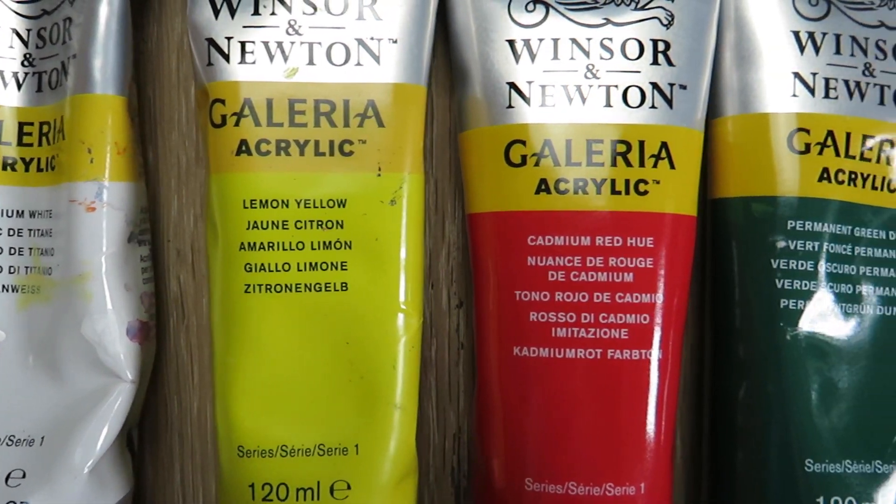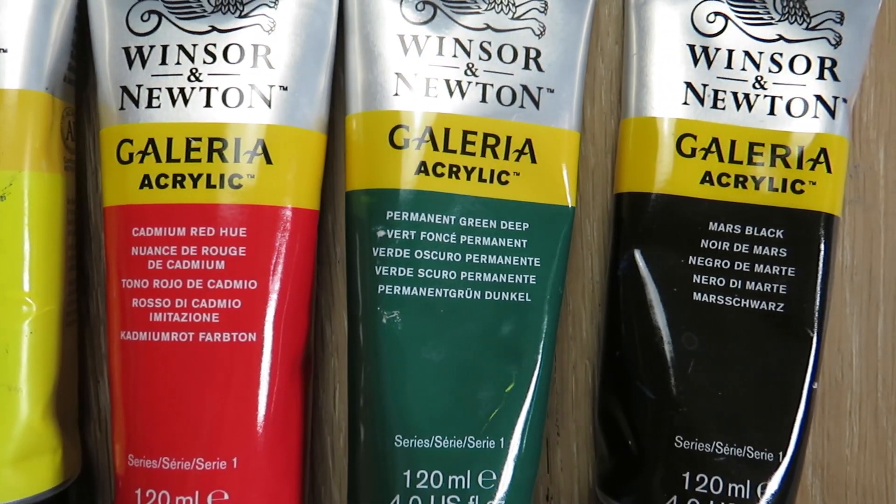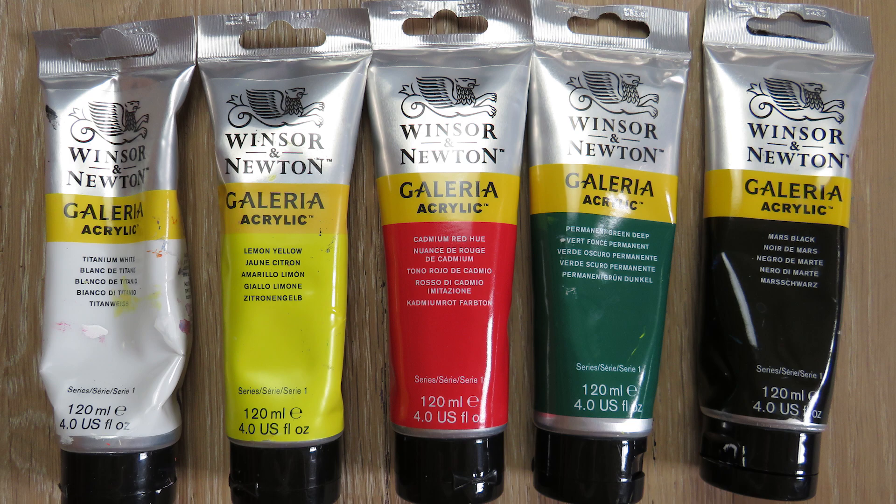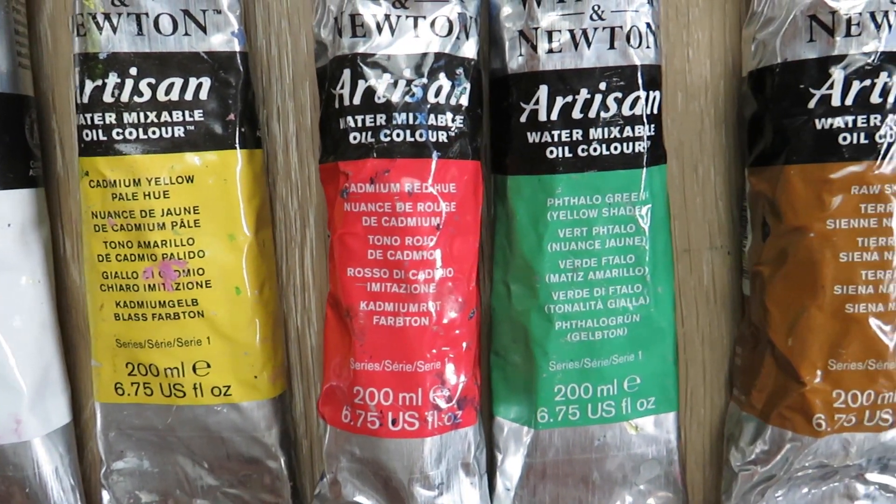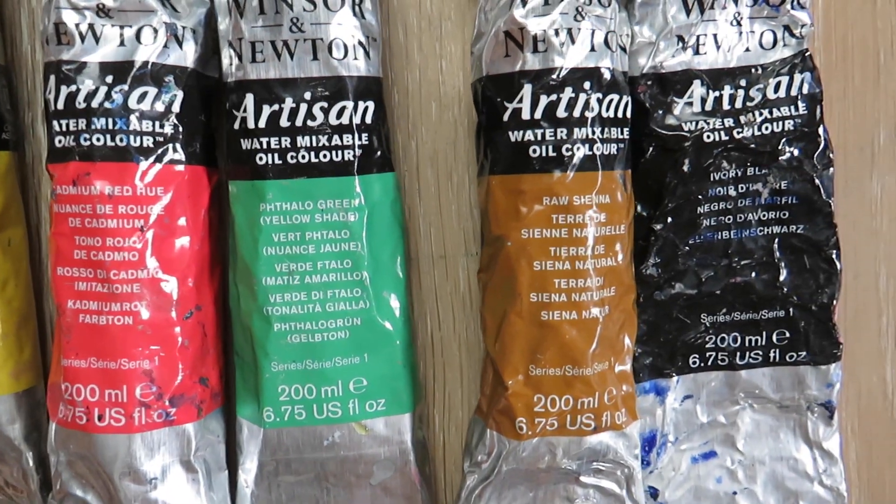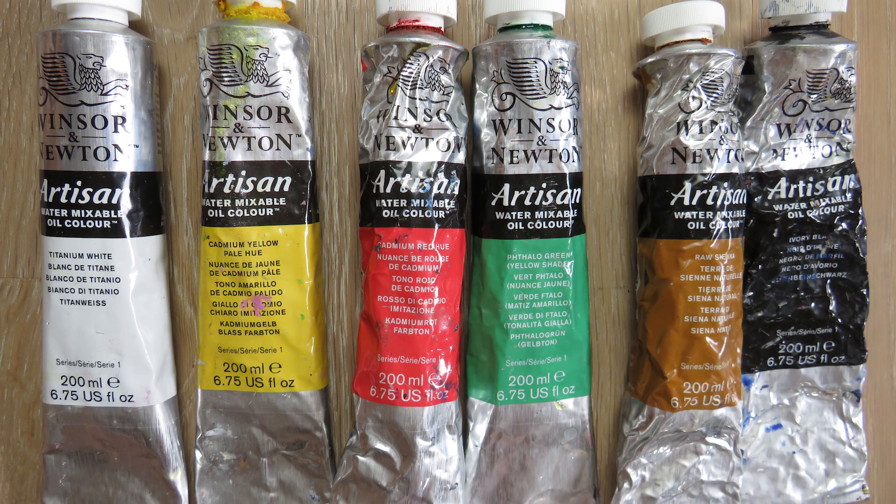The acrylic colors we need are white, lemon yellow, cadmium red, permanent green, and black. For the oil layer we use zinc white, cadmium yellow pale hue, cadmium red, phthalo green yellow shade, raw sienna, and black.